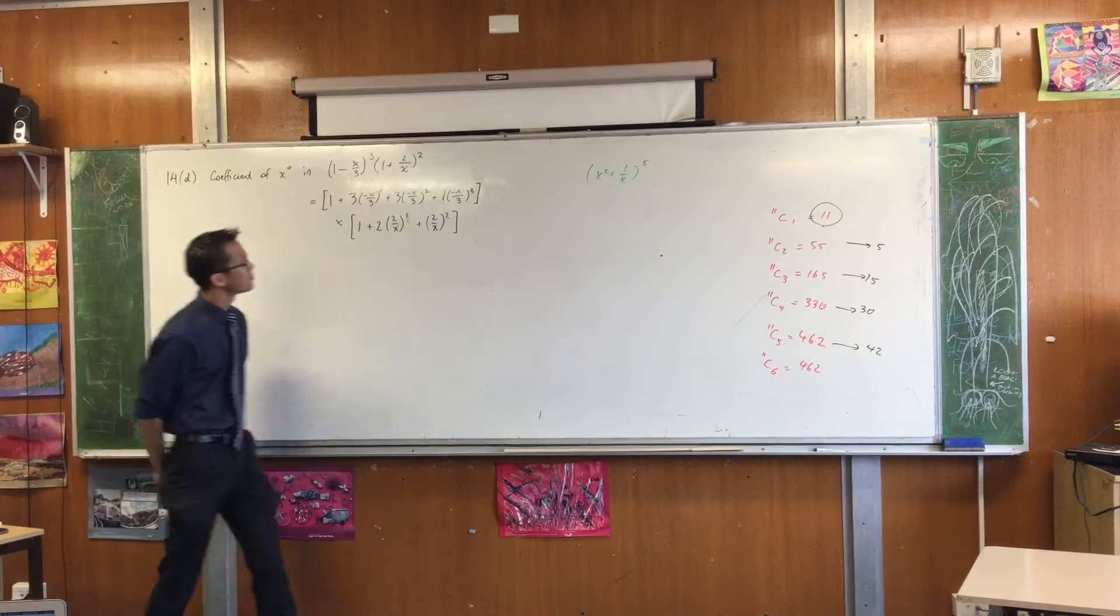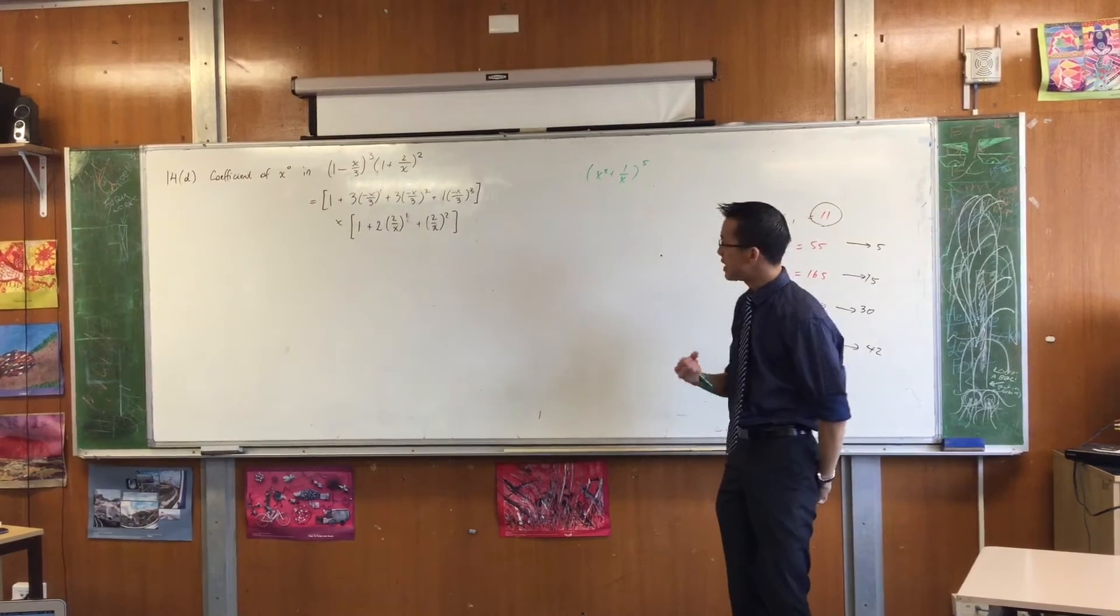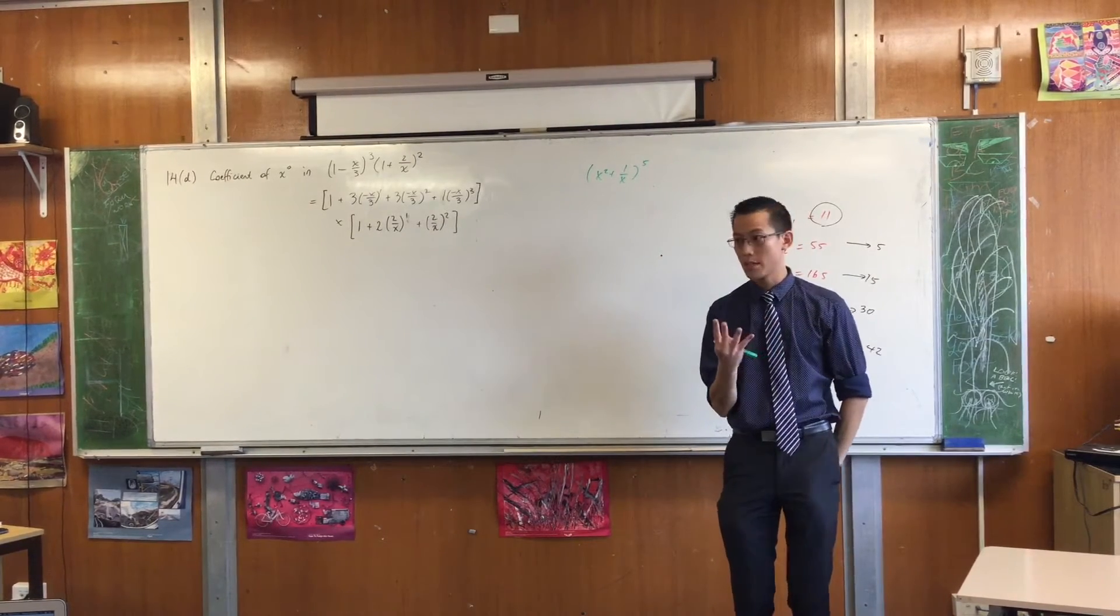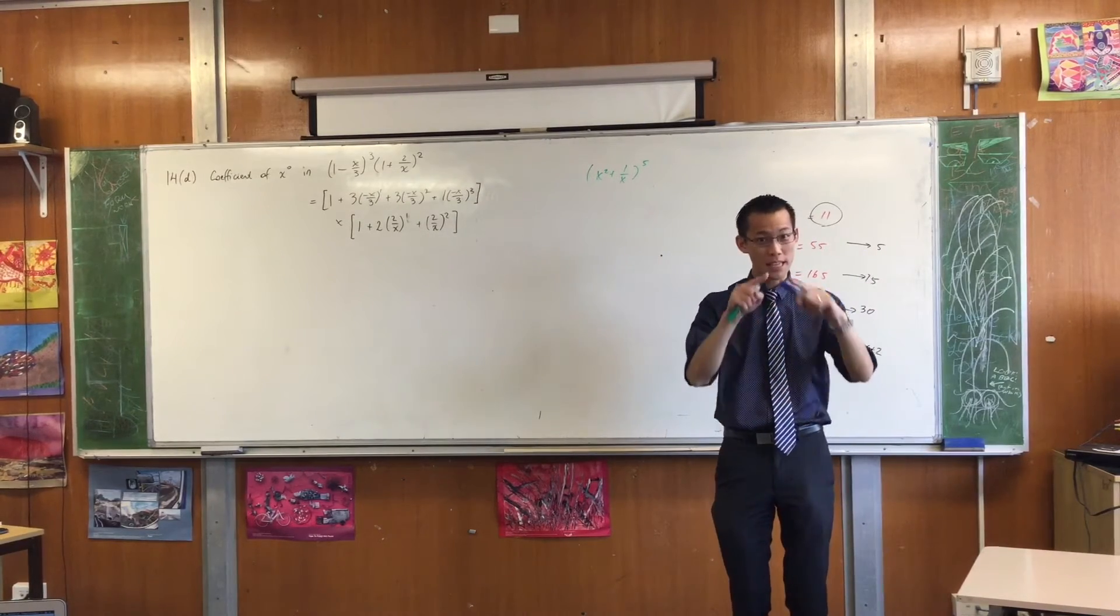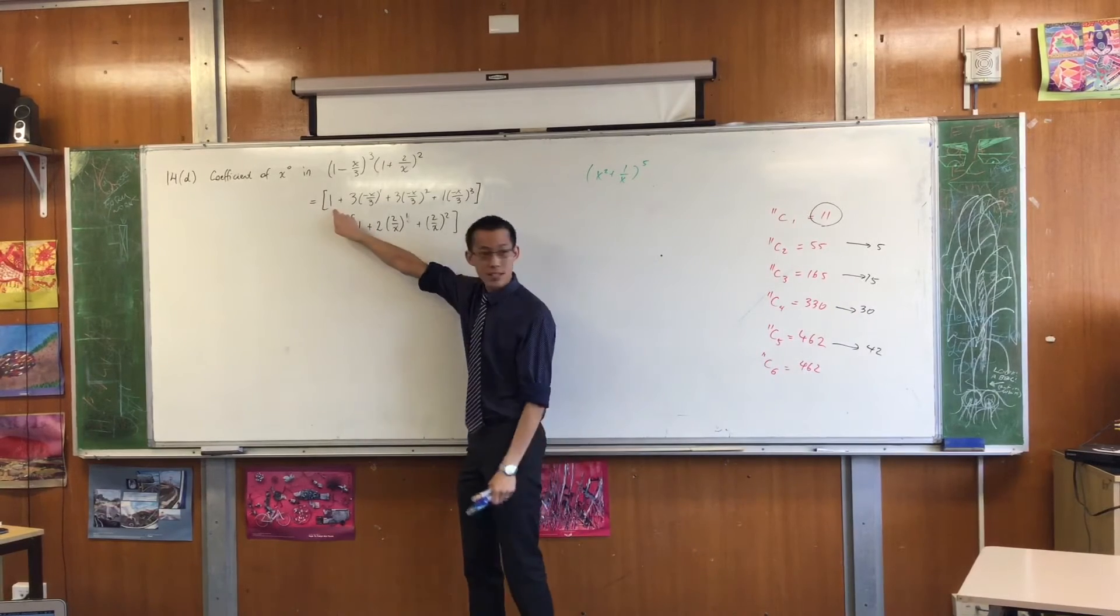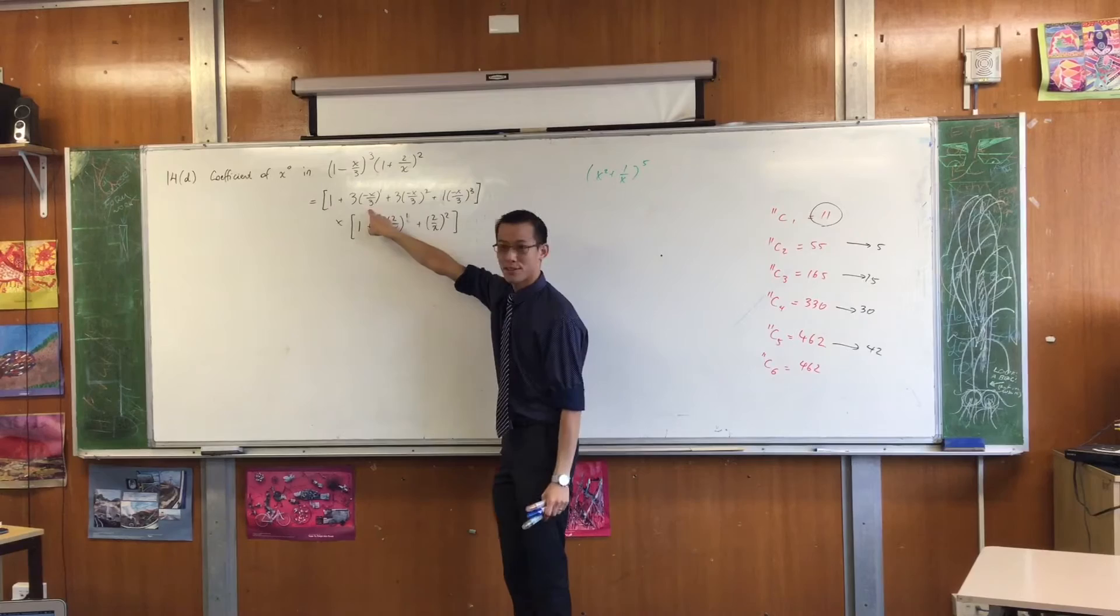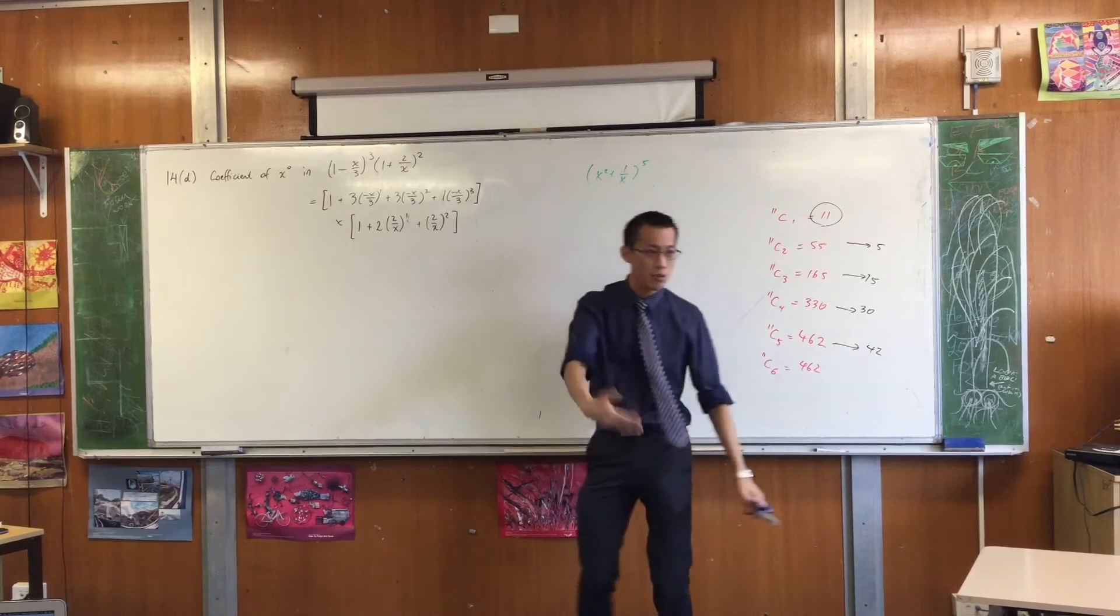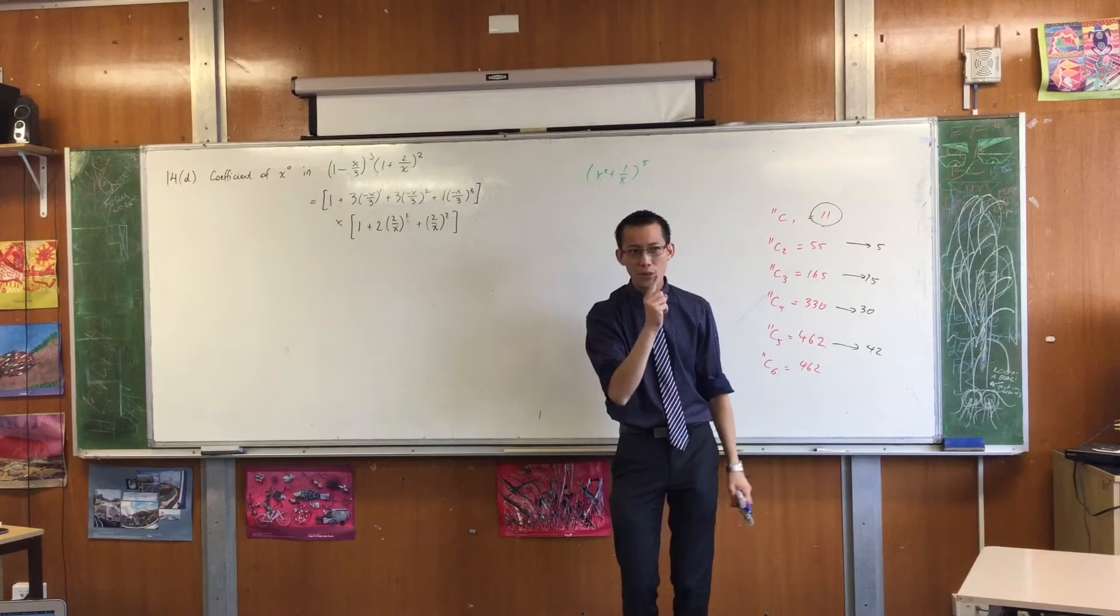Let's have a look. If I were to do this in long form, what would I do? The answer is, there are four terms in the first set of brackets, there are three terms in the next set of brackets, and I would have to say, this times 1, 2, 3. And then I'd have to go, this times 1, 2, 3. And I'd have to do that all the way through to the end. But I don't have to.